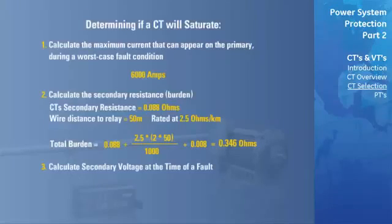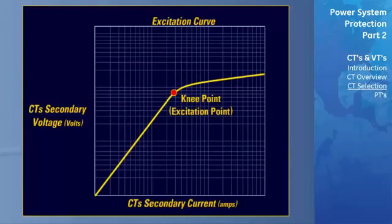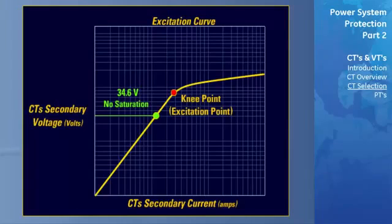Now the secondary voltage at the time of a worst-case fault can be calculated. First, the total burden resistance of 0.346 ohms is multiplied by the maximum fault current of 6,000 amps. The result is then divided by the CT ratio of 300 to 5, concluding that the secondary voltage at the time of a worst-case fault is 34.6 volts. By plotting the 34.6 volts value on the excitation curve, we notice that it falls well below the knee point, indicating that it will not saturate under a worst-case fault condition. If the factors affecting the burden were ever to change, or a higher fault current is measured, these calculations must be repeated to ensure the CT does not saturate.